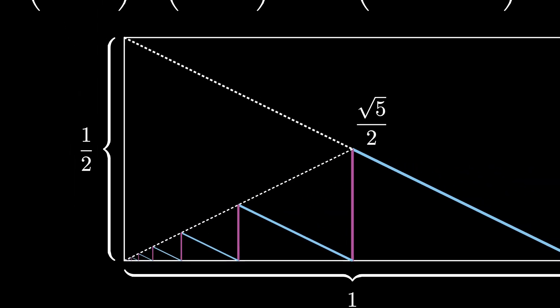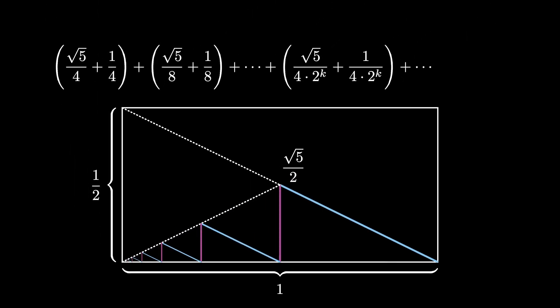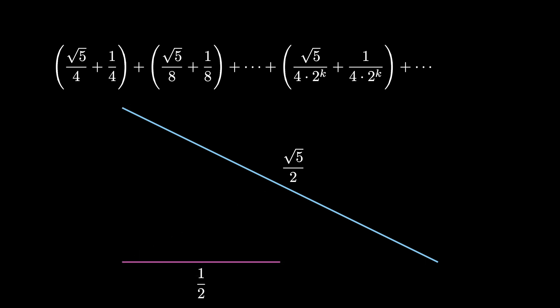Again we can rotate the vertical pink segments 90 degrees, and they fill in half of the side length of 1. We can also shift the blue diagonal line segments up to the main diagonal of the rectangle, filling in the entire diagonal. And that means that the sum that we're interested in, the infinite sum, is the sum of these two lengths.